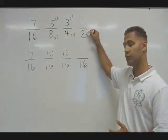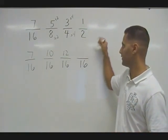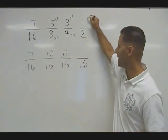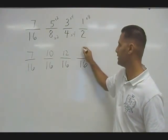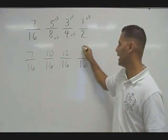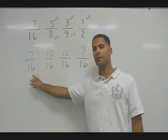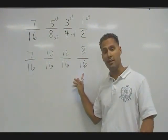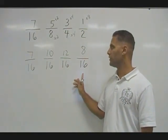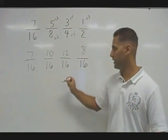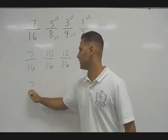And for this two here, it would take eight of these to make 16, so we are going to increase this numerator by a factor of eight. Now, because all of the denominators have the same units, we can easily compare them. We can see that the lowest number of sixteenths in this case would be seven sixteenths.